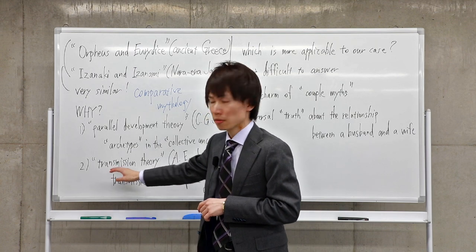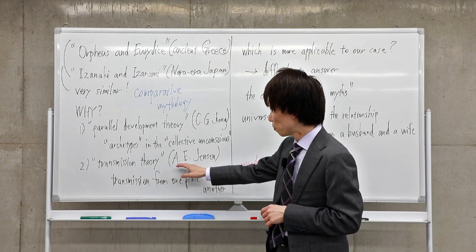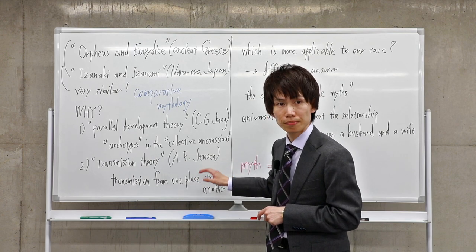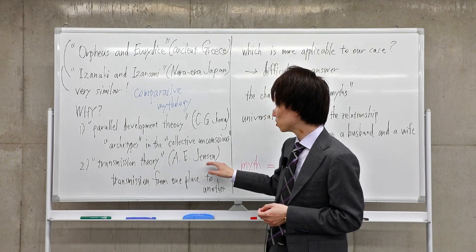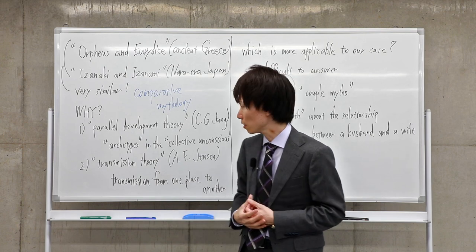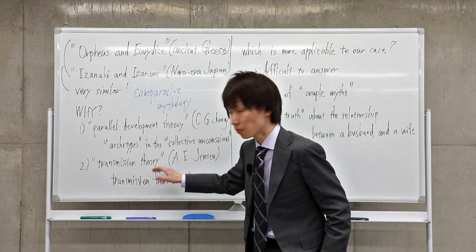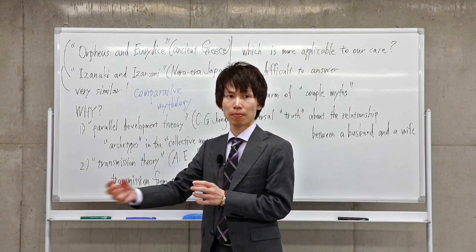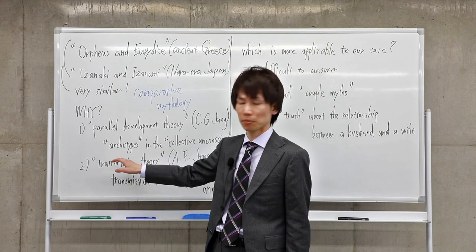I move to the other theory, transmission theory. This theory is proposed by German anthropologist Adolf Jensen. He is a kind of rival of Jung and refused Jung's parallel development theory as unconvincing. Instead, he proposed the transmission theory. This theory is very simple: our culture is transmitted from one place to another. That's why his theory is called transmission theory.